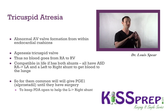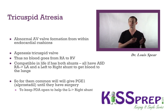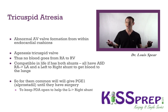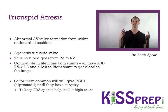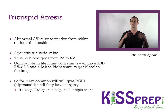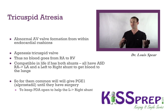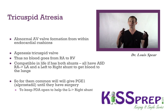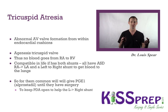Tricuspid Atresia is abnormal AV valve formation within the endocardial cushioning. There is agenesis of the tricuspid valve, so blood cannot go from the right atrium to the right ventricle. This is not compatible with life unless you have an atrial septal shunt, a ventricular septal shunt, and an open PDA. To keep the PDA open, you give a prostaglandin analog such as alprostadil. They will ultimately still need surgery.